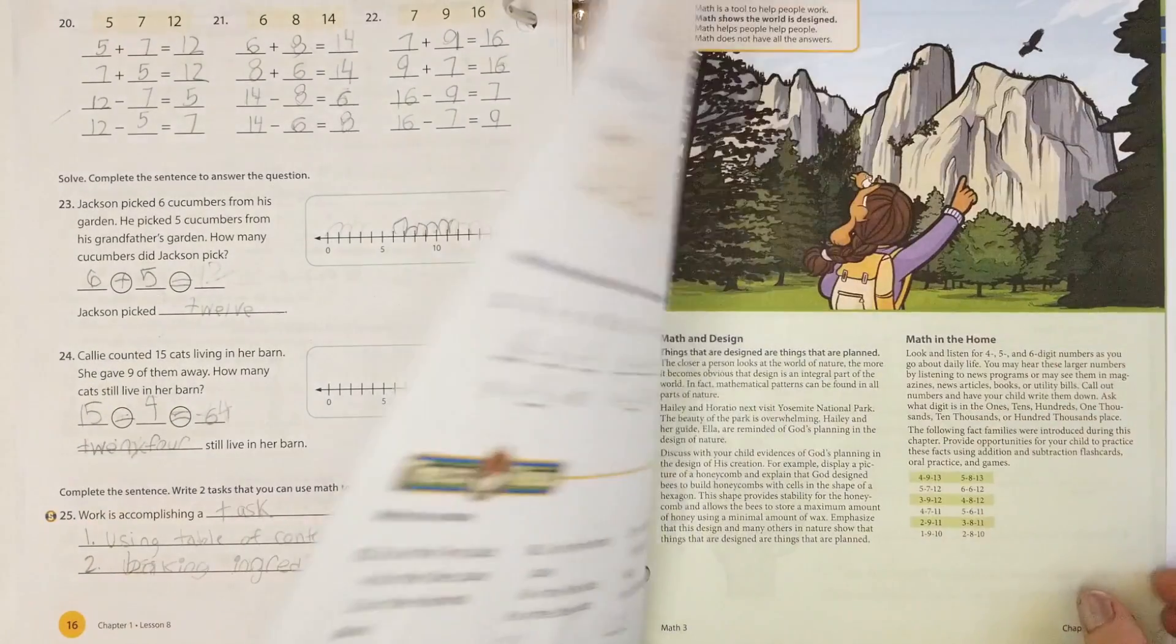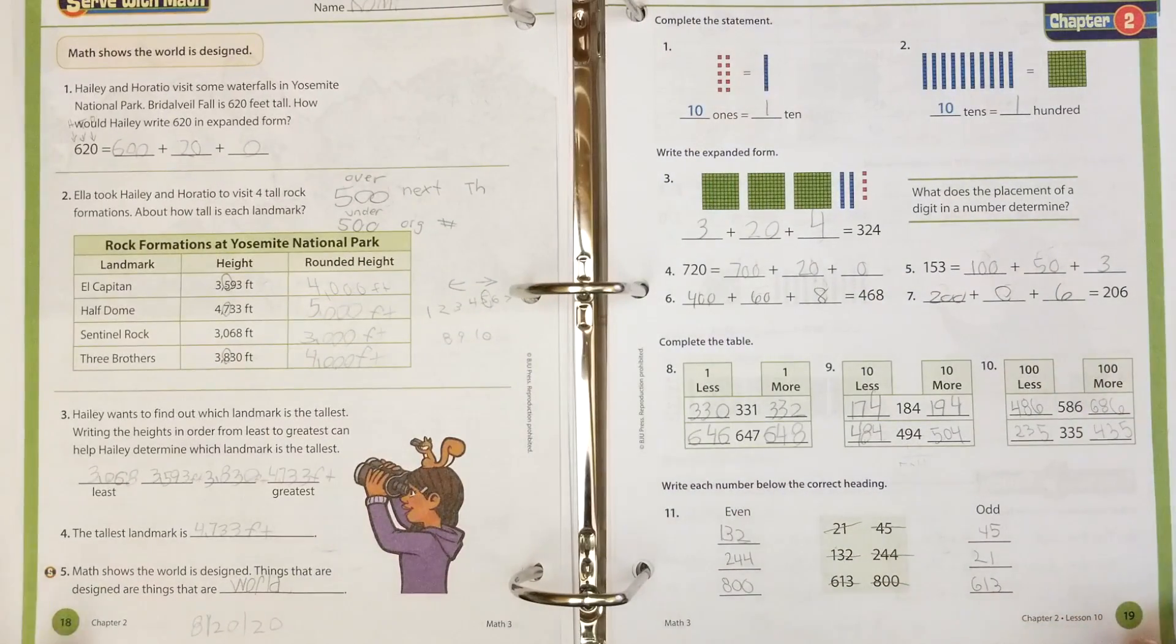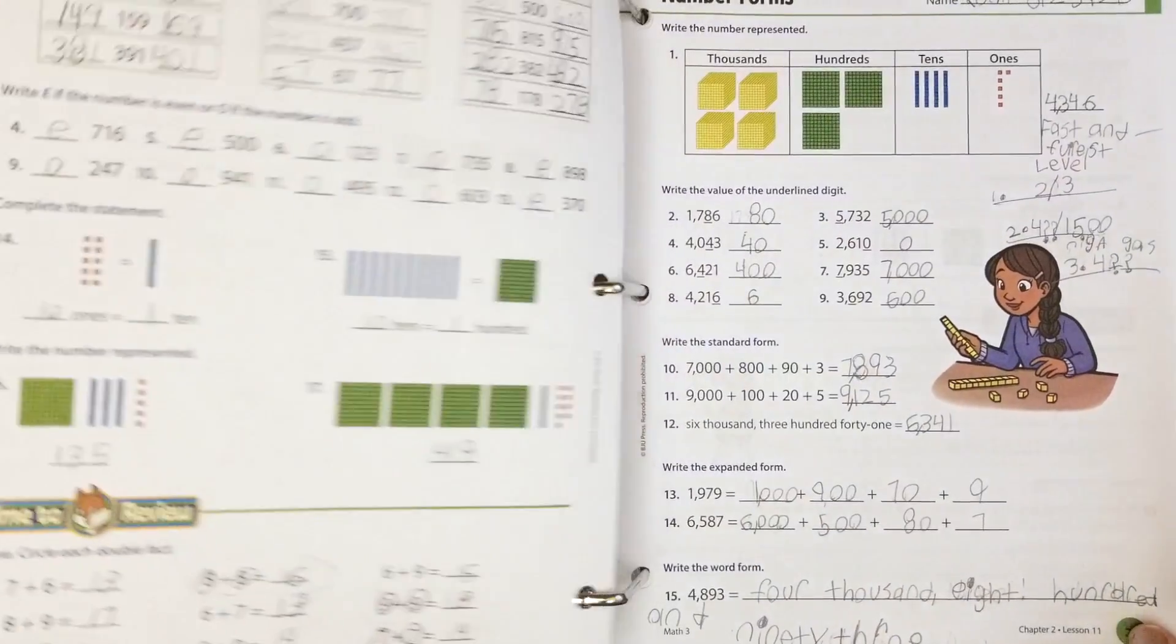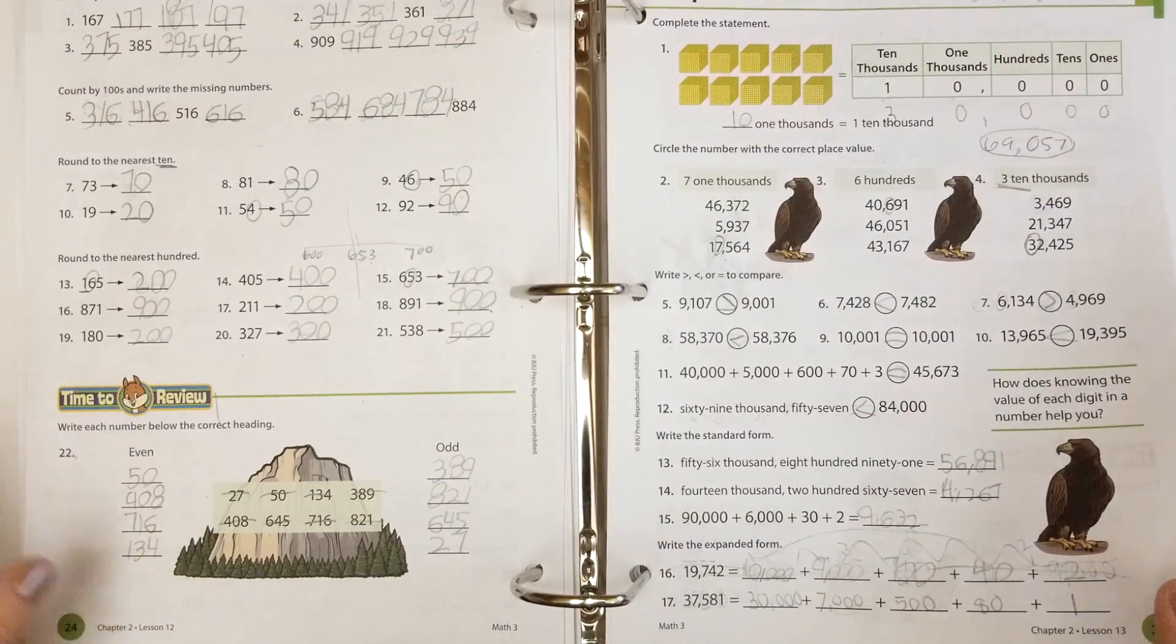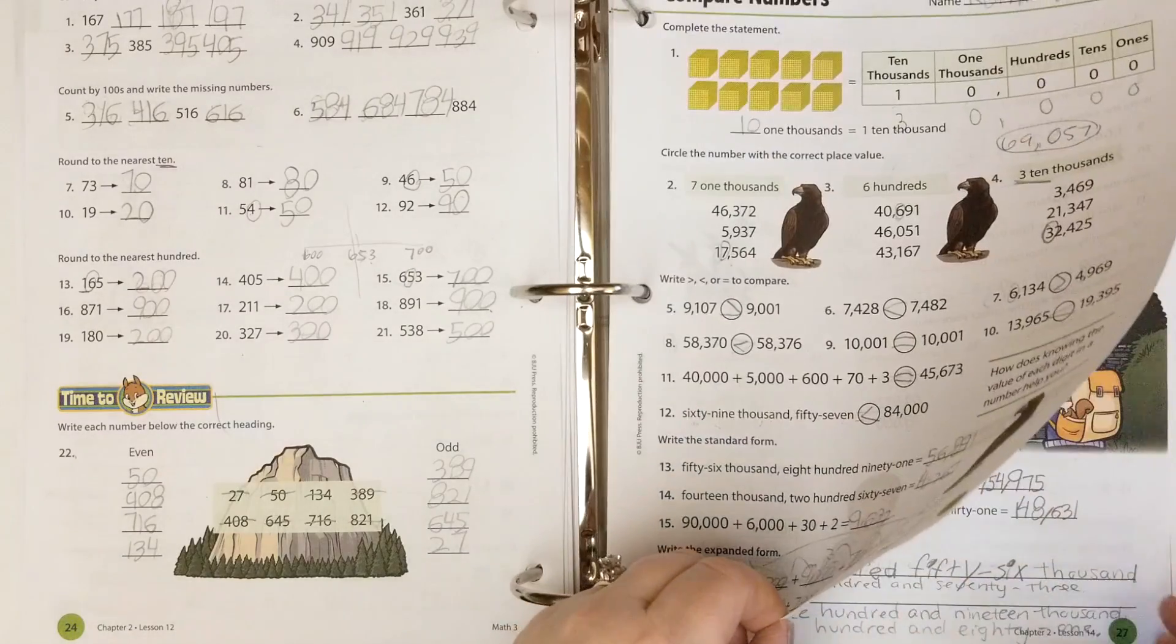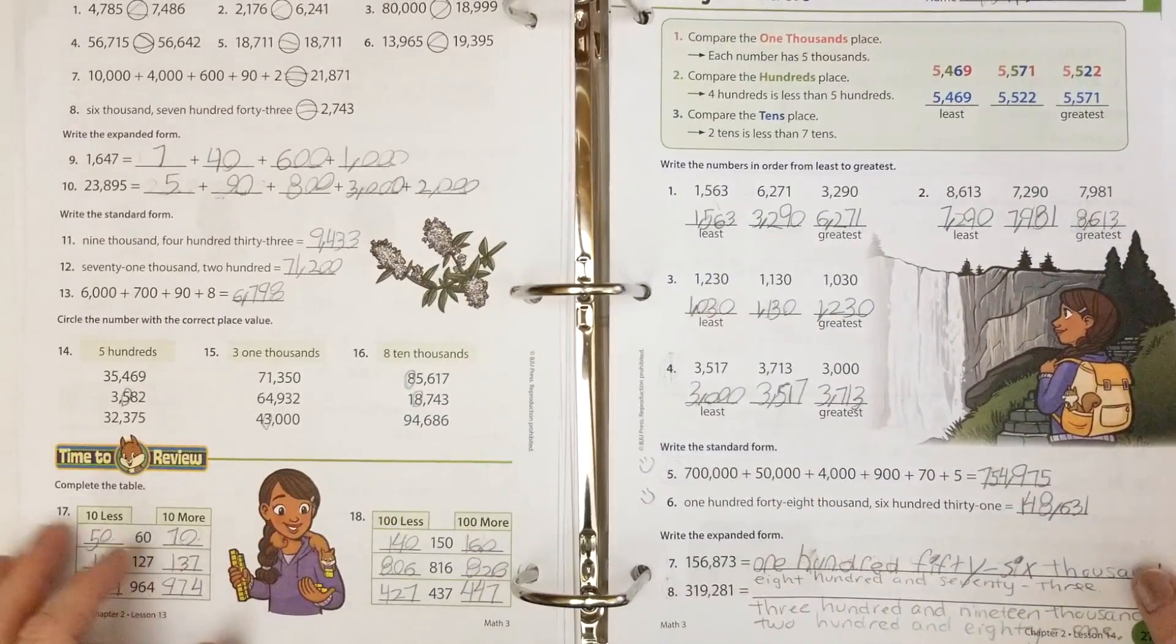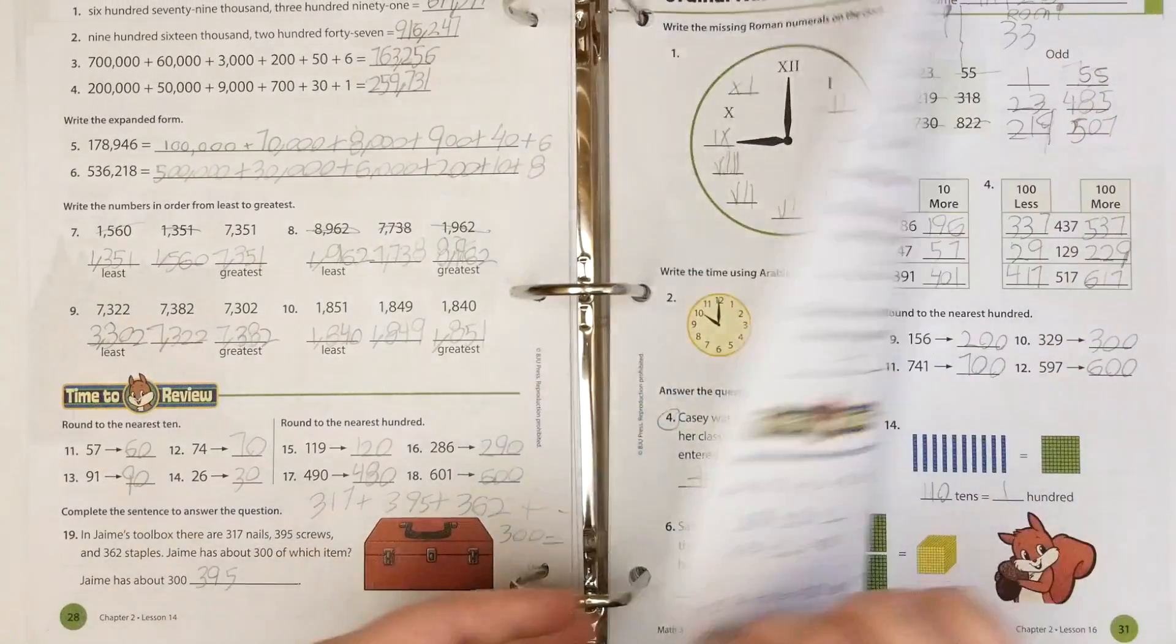They always do reviews at the end of the chapter. I'm not showing you the titles because it has her name and all of her information, so I apologize for that. They have fact families for fifteen, sixteen, seventeen, eighteen. Another chapter where they're going over place value, even and odd numbers, lots of review from second grade, counting by tens and hundreds, rounding things up, learning Roman numerals.